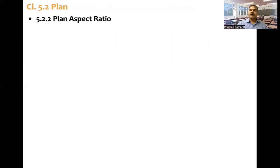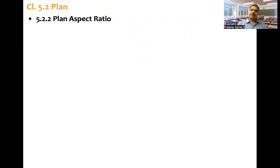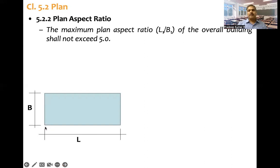Coming to plan aspect ratio in tall building code IS-16700: the maximum plan aspect ratio, that is L1 divided by B1, of the overall building shall not exceed 5.0. This is the plan of the building, L is the length, B is another dimension, width. L by B, or L1 by B1, should not exceed 5.